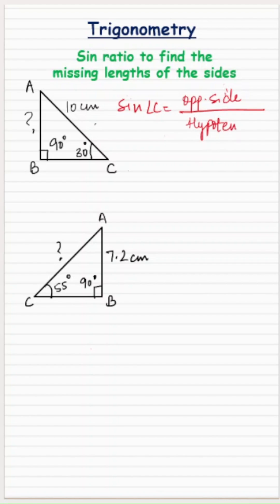So now we will fill in the values. Sine C, what is angle C? 30 degrees. So sine of 30 degrees is equal to what is the opposite side? Opposite to angle C you have the side AB which is actually missing and we need to find out, and what is the hypotenuse? It is 10 centimeters.